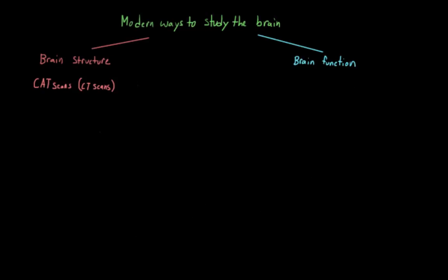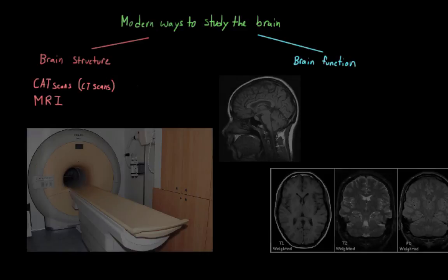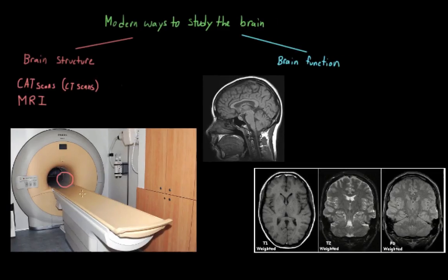Another way that we can look inside of the skull to look at brain structures is with magnetic resonance imaging, or MRI. Instead of using x-rays like a CAT scan, this method uses radio waves. A person's head is placed within a machine and they're exposed to a strong magnetic field. This magnetic field causes the atoms in the brain to line up, to align in a certain direction.